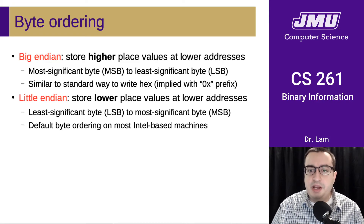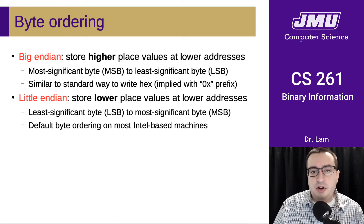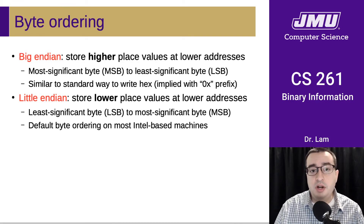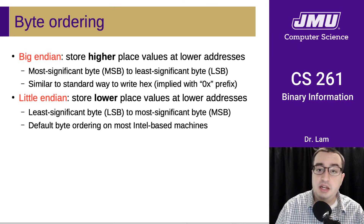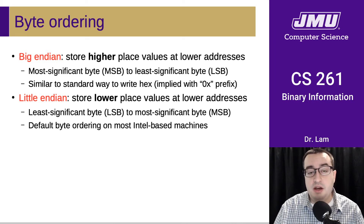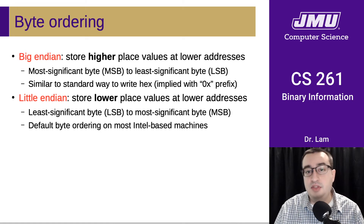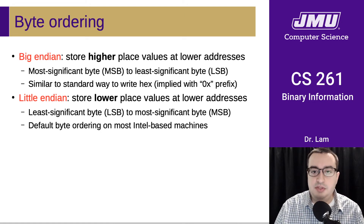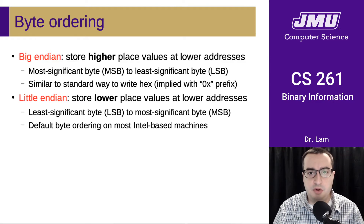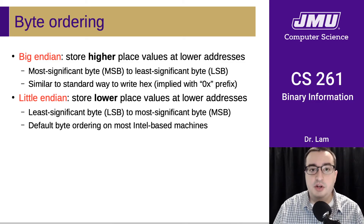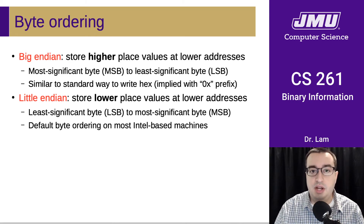Once we have a bunch of bytes in memory, there is the question of what order we store those bytes in. One option is to store the higher place values at the lower addresses — this is called Big Endian format. This basically means we place the most significant byte at the beginning and the least significant byte at the end. This is actually the way that we write hexadecimal normally — the most significant things at the beginning.